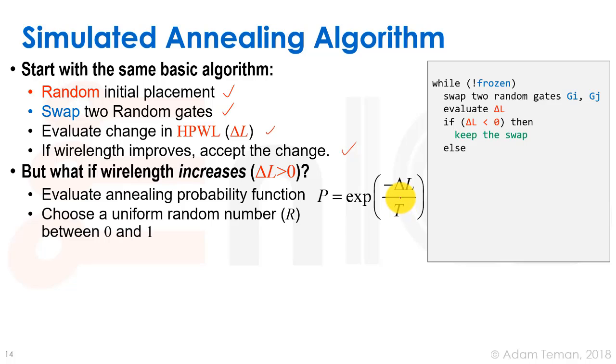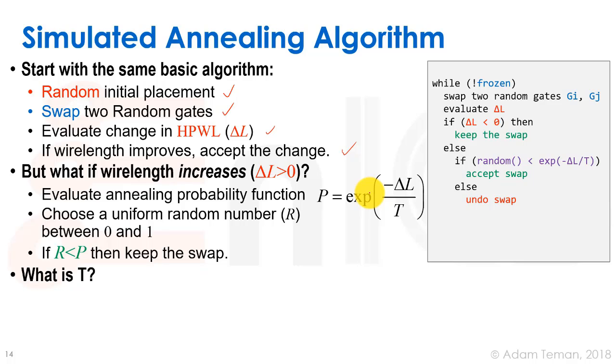We take P = e to the power of minus delta L over T. Then we choose a random uniform random number R that's between zero and one, and we evaluate if R is smaller than P. If the random number is smaller than this P value, then we keep the swap. If not, then we get rid of the swap.